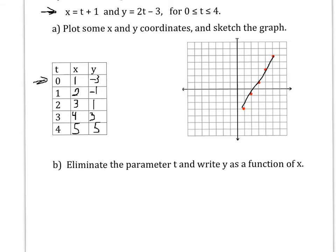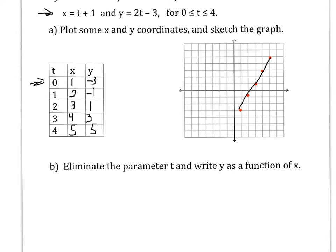There's different ways to do it, but we're trying to get rid of t. In this particular case, it's not too hard. You could solve the first equation for t. T equals x minus 1. And then you could plug that t into the second equation. Y equals 2x minus 5 for 1 less than or equal to x less than or equal to 5.